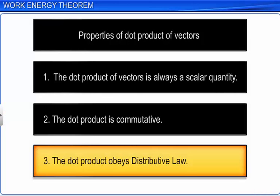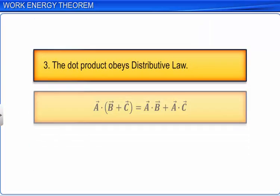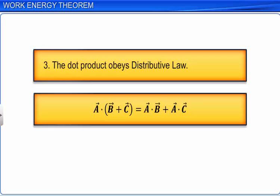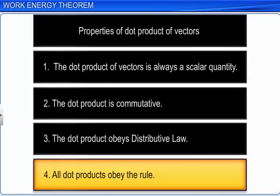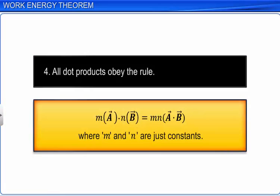The dot product obeys the distributive law. So, A dot (B plus C) is equal to A dot B plus A dot C. All dot products obey the rule: M times A dot N times B is equal to MN times A dot B, where M and N are constants.